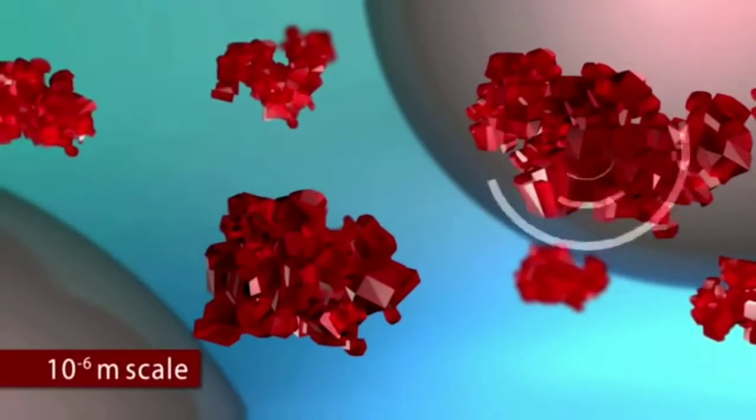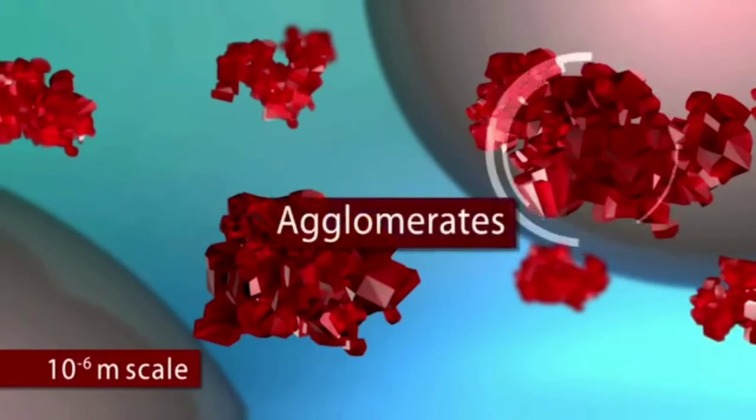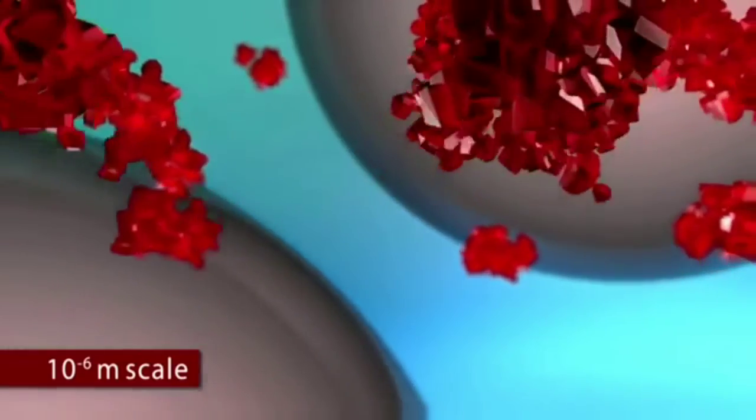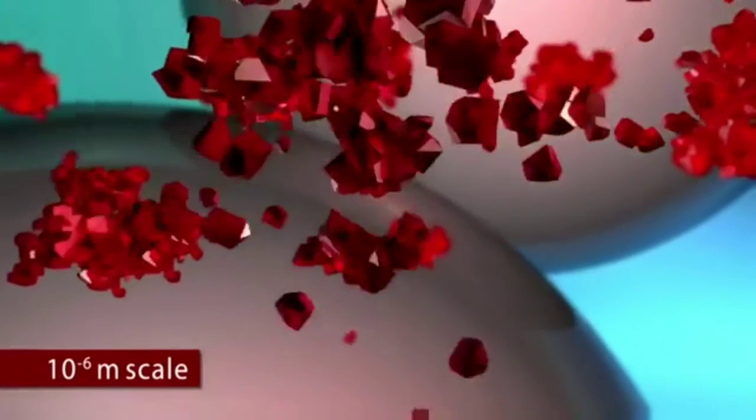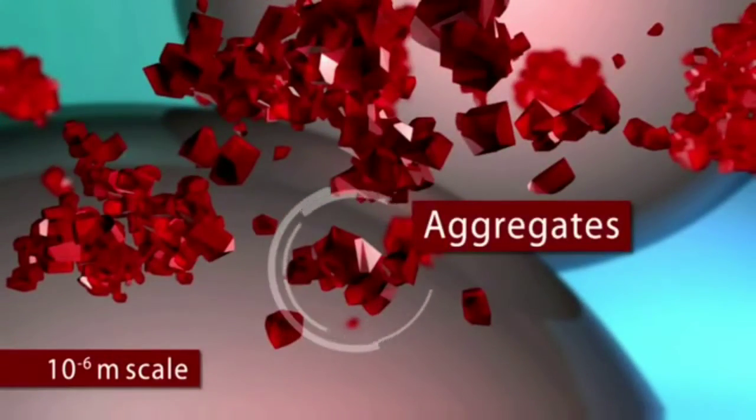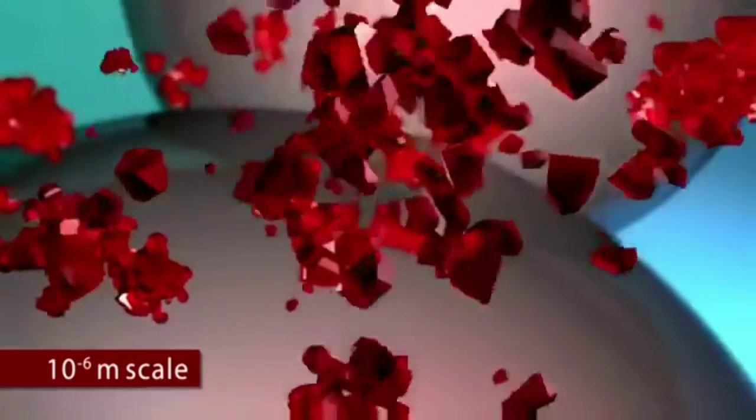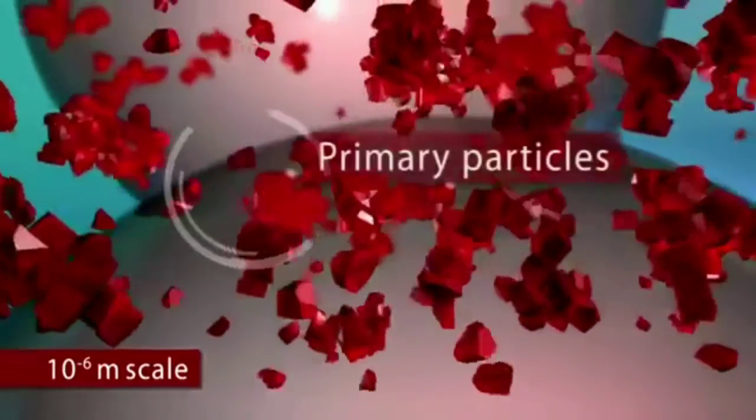Dry pigments are made up of agglomerates or aggregates of primary pigment particles. During the dispersion process, they have to be broken down into, as far as possible, primary particles.